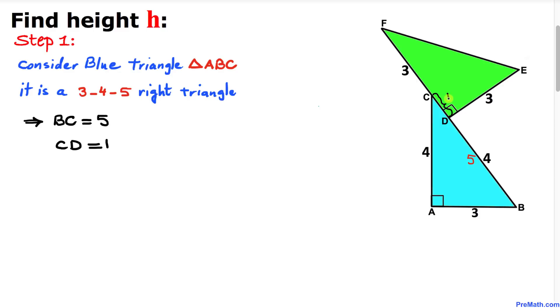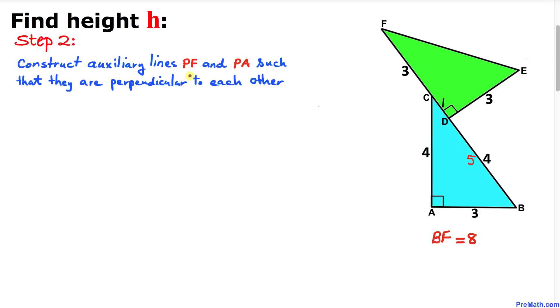The length of the whole side BF is going to be the sum of 3 plus 1 plus 4, which equals 8. Here's our next step: we are going to construct auxiliary lines PF and PA such that they are perpendicular to each other.